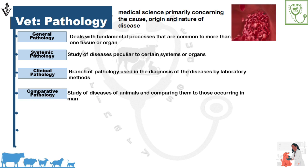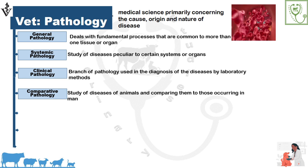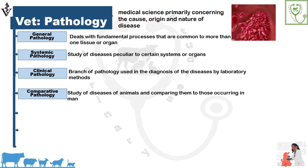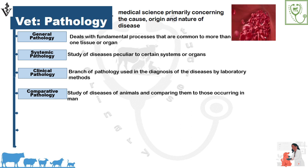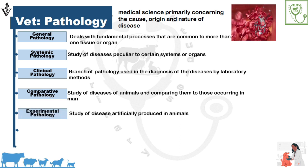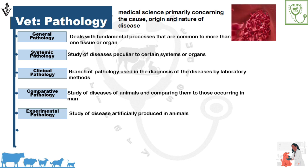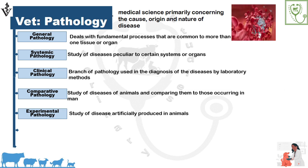Comparative pathology is the study of diseases of animals and comparing them to those occurring in humans. Certain diseases are zoonotic and can be transmitted from animals to humans — tuberculosis is one example, affecting both animals and humans. If we compare the pathology of tuberculosis between humans and animals, that is comparative pathology. Experimental pathology is the study of disease artificially produced in animals and is conducted purely for research purposes.